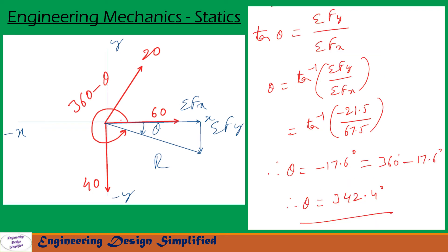Direction of the resultant can be found as tan theta equal to sigma Fy by sigma Fx. So theta equal to tan inverse sigma Fy by sigma Fx. So after substituting the values of sigma Fy and sigma Fx and simplification, we get theta equal to minus 17.6 degrees. So that is a clockwise direction minus 17.6 degrees.